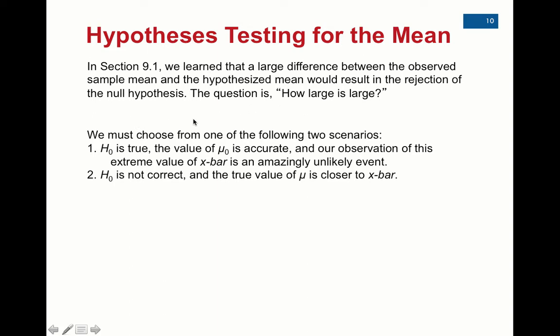So under this scenario, if we have what we call a large distance, there's really two scenarios. The null hypothesis that says what the mean value is, let's say the mean is 500. The value of that mean could still be accurate, and the observation that we got, say the 530 from the last example, was just an extreme value of X bar and was extremely unlikely.